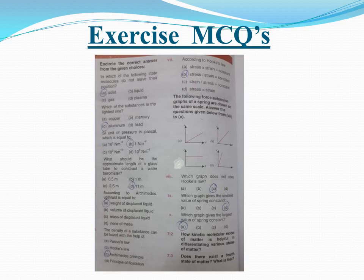Which graph gives the smallest value of spring constant? Since k = F/x, the graph with the smallest force gives the smallest k — that is option D. Which graph gives the largest spring constant? In that graph the force has the largest value, so its slope is greatest and k is largest — the answer is option A. This is how we solve these MCQs. Thank you.